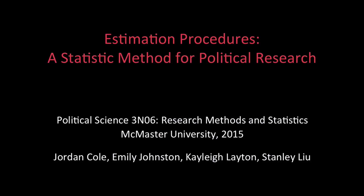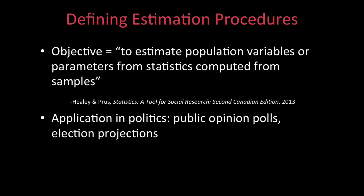Today we'll be looking at chapter six of the Healy and Proust textbook that discusses estimation procedures. The goal of estimation procedures is to estimate population variables or parameters from statistics computed from samples. In politics, this type of sampling is most commonly used in public opinion polls and election projections, but it has also become a popular way to estimate variables on a wide variety of social and cultural issues.